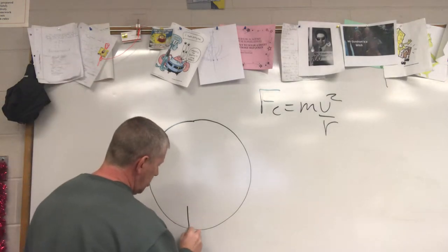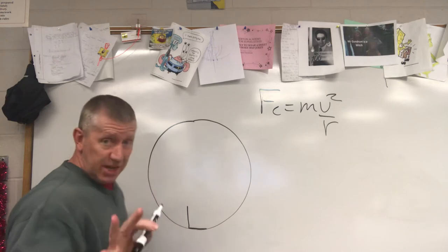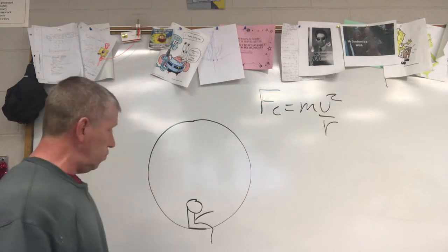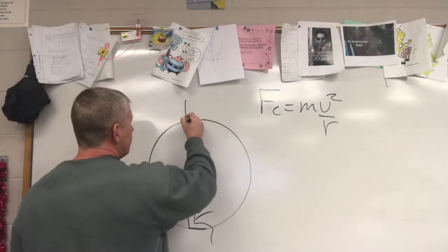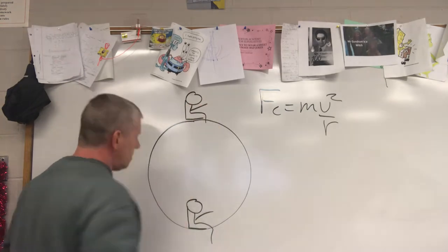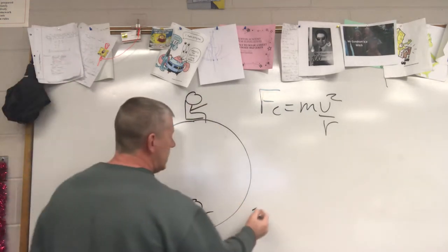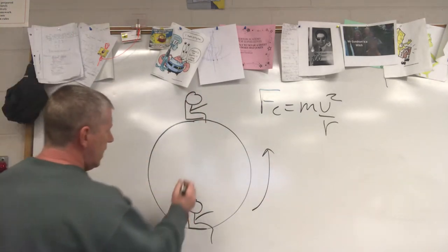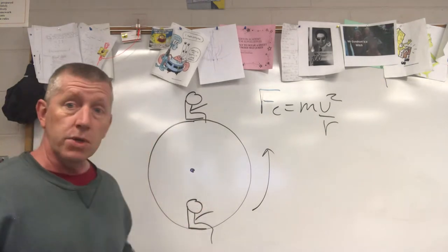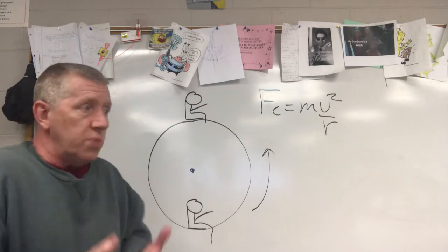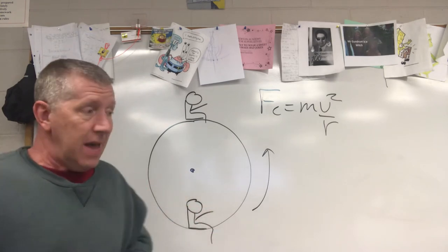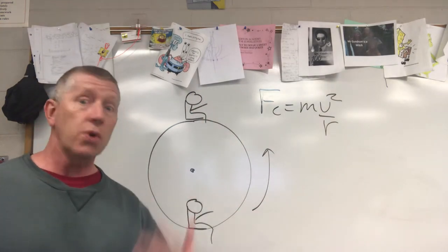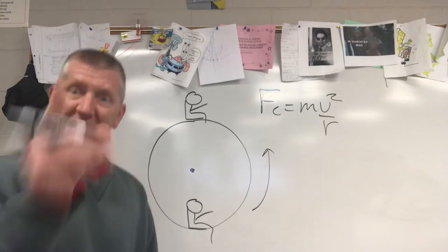Let's say you've got a person sitting at the bottom in the seat, and at the top here you are enjoying the ride. The ferris wheel is rotating in the counterclockwise direction. Since you are going in a circle, you have to have centripetal force — you can't go in a circle without it. Without centripetal force, you'd go straight, but you're going in a circle, so centripetal force must be present.